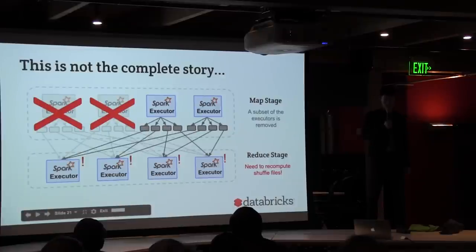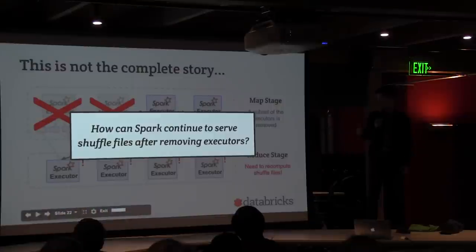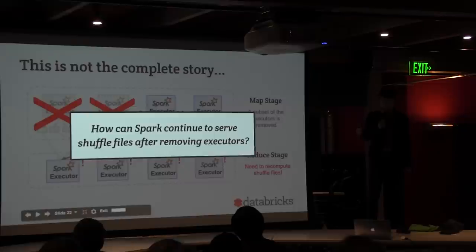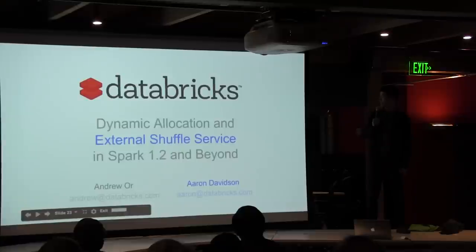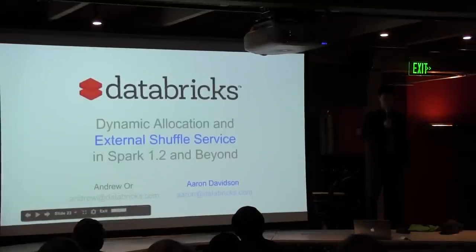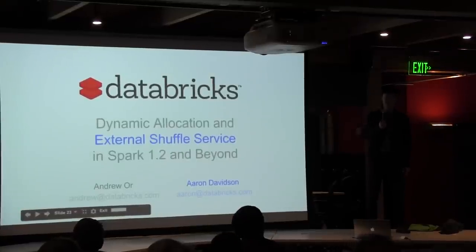If we don't consider this shuffle problem, doing dynamic allocation will mean we'll never make progress for shuffle workloads — and shuffle is a pretty common workload. We need to ensure that Spark continues to serve the shuffle files after killing the executors. Aaron is going to introduce the external shuffle service that solves this problem.